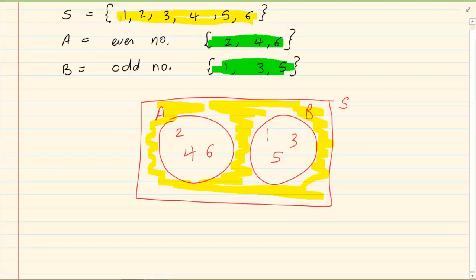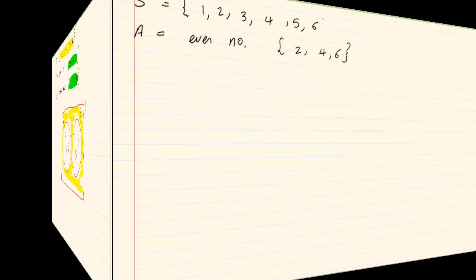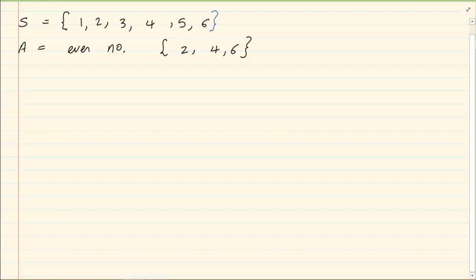Now let us do the same thing but slightly different. We have the sample space again 1, 2, 3, 4, 5, 6. Our event A is even numbers. Our event B is all numbers less than 5. So that would be 1, 2, 3 and 4. Less than 5 means below 5.